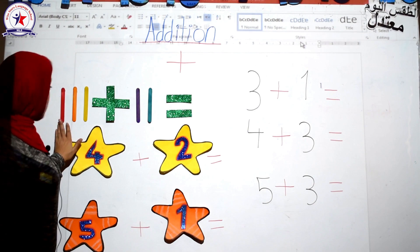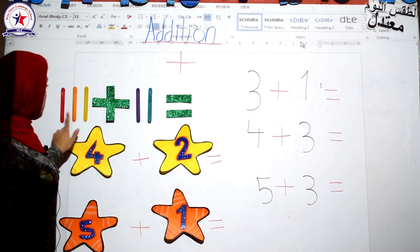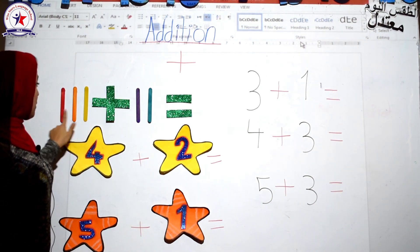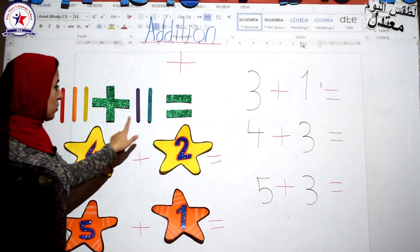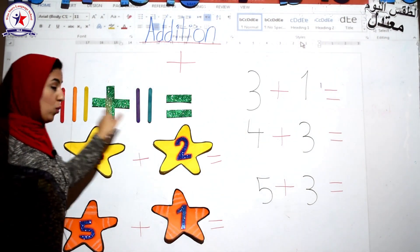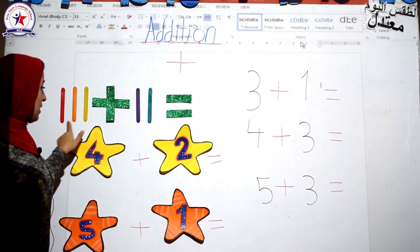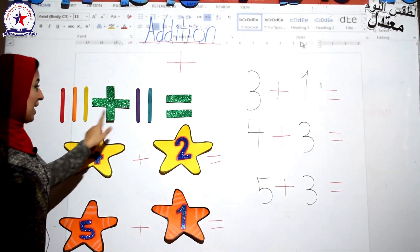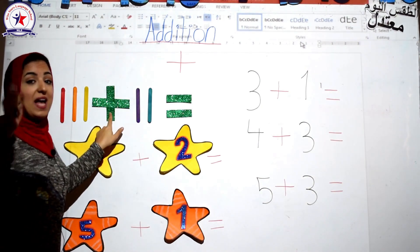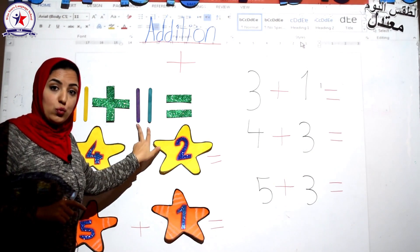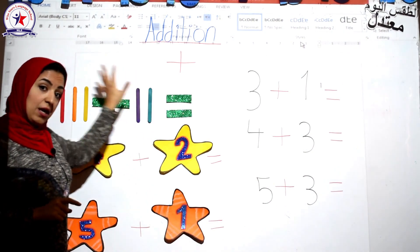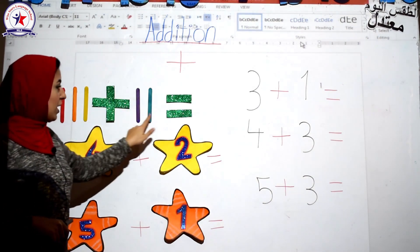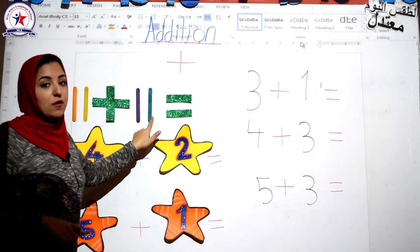Let's see it on the board. Here I have one, two, three objects. Three plus one, two. So, three plus two. Three and I will add another two. Let's count how many in all: one, two, three, four and five.